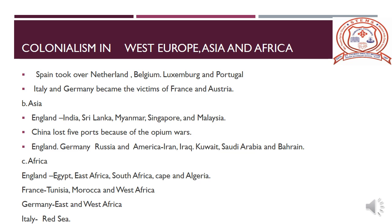The colonies established in Asia by European powers: England colonized India. In addition to India, they got control over Sri Lanka, Myanmar, Singapore, Malaysia and even China. A war took place between England and China between 1839 to 1845, which came to be known as the Opium Wars.